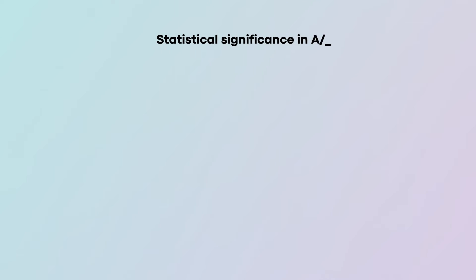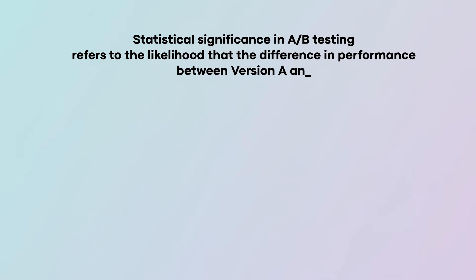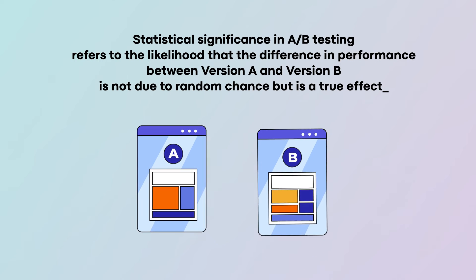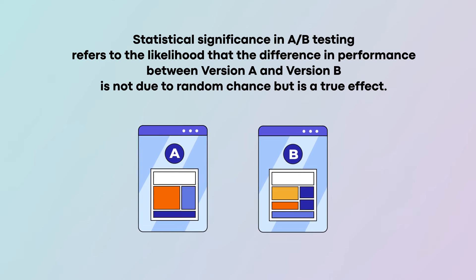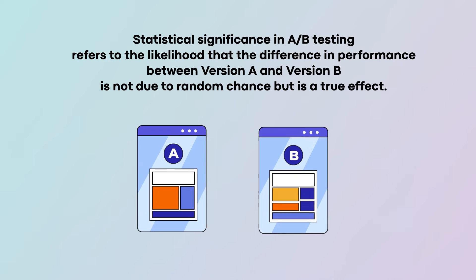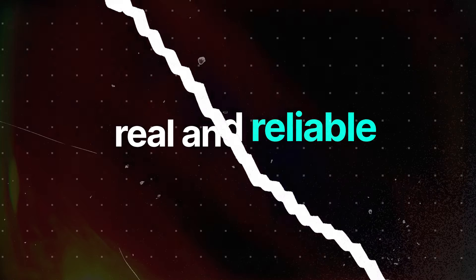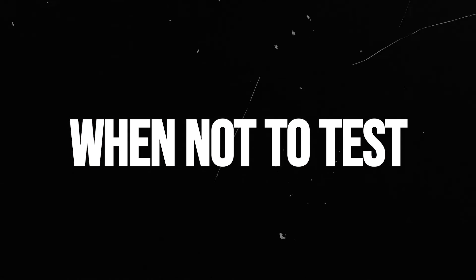Statistical significance — in case you skipped stats class that day — means in A/B testing we're referring to the likelihood that the difference in performance between version A and version B is not due to random chance, but is a true effect. It helps you confidently conclude whether the observed differences are real and reliable.